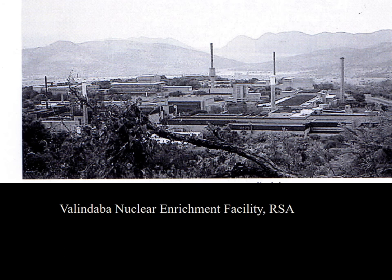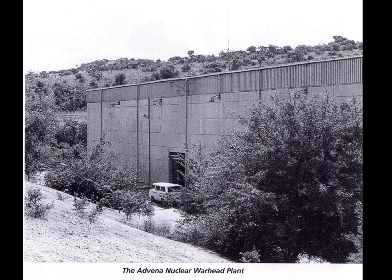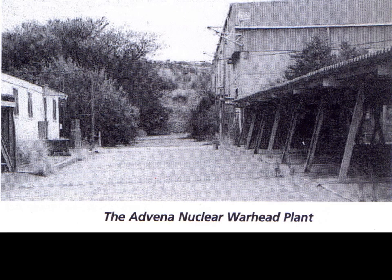This is the Valindaba Nuclear Enrichment Facility in South Africa. The Advena Nuclear Warhead Plant is actually just a small warehouse — not actually a warhead plant, simply a plant in the larger South African energy infrastructure. The South Africans had scientists with advanced skills at operating energy reactors, so it took very few additional resources to assemble a warhead. Inside this plant, South Africa assembled six nuclear warheads — the seventh wasn't completed. Nuclear warheads are fairly cheap if you already have the personnel and facilities being used to machine uranium into rods for nuclear reactors.